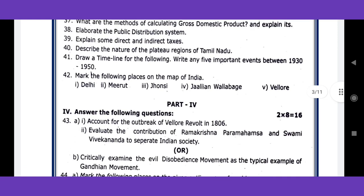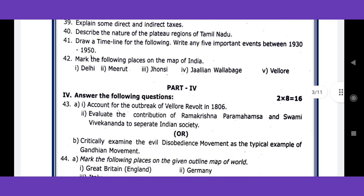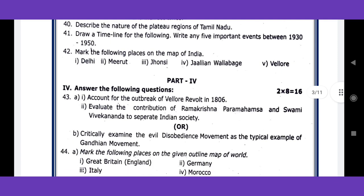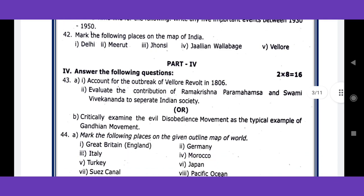We have seen events from 1550 onwards. The map question includes places such as Delhi, Meerut, Jhansi, Jallianwala Bagh, and other places. Questions 29 to 41 — and question 42 is a compulsory attempt.